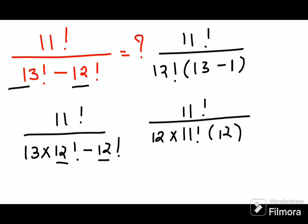So now if you look closely things are getting cancelled. This and this is getting cancelled. So your final answer is coming out to be 1 upon 12 into 12. The final answer for this one is just 1 upon 144.